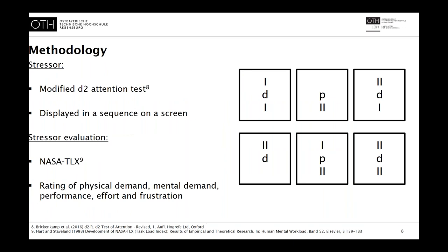The stressor we used was equal for both studies. In cooperation with our psychologists, we used a modified version of the D2 attention test, which is widely used in the field of psychology. We displayed Ds and Ps with one to four dashes on an additional screen. Participants had to confirm every D with exactly two dashes with 'yes,' and every other combination with 'no.' For evaluation of the stressor, we made use of the established NASA TLX questionnaire, where participants rate perceived physical demand, mental demand, performance, effort, and frustration directly after the run on a scale from 0 (low) to 10 (high).